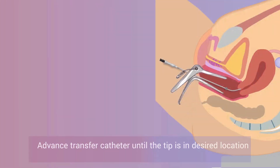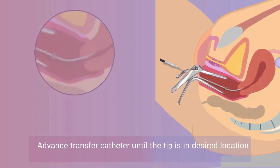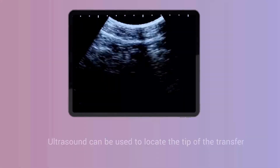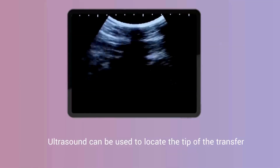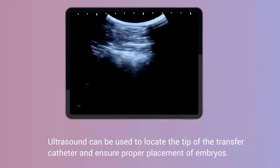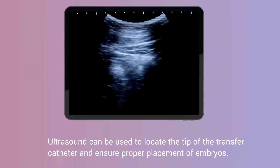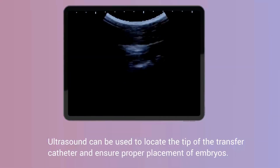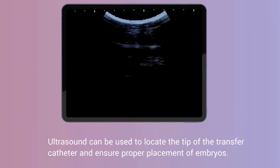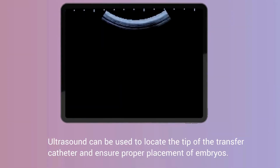Advance the transfer catheter until the tip is in a desired location within the uterine cavity. Ultrasound can be used to locate the tip of the catheter and ensure proper placement of embryos.